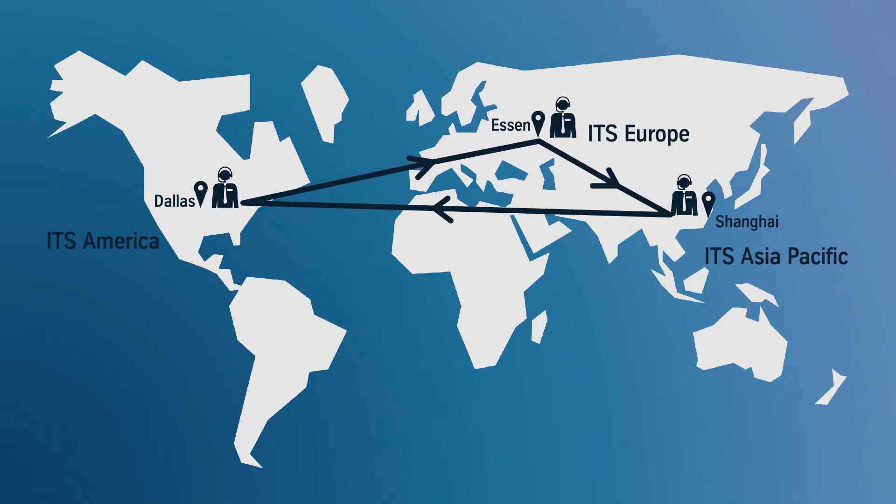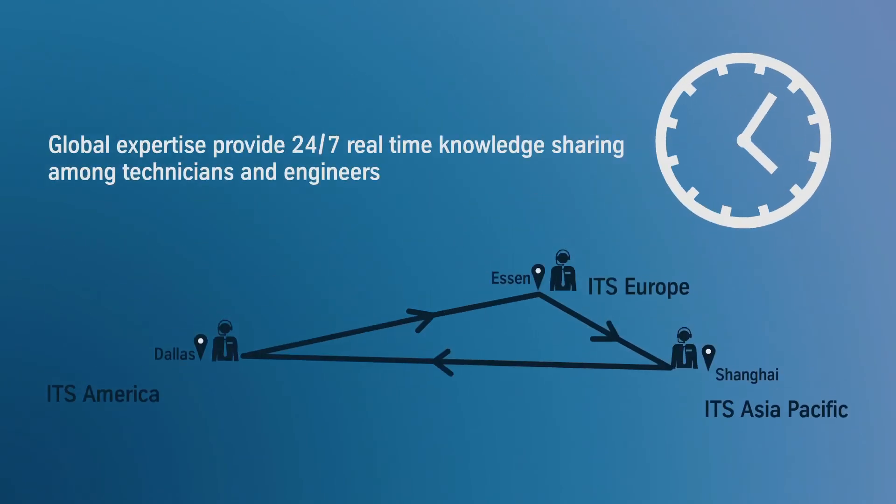ThyssenKrupp has set up a world-class, unique and dedicated ITS Asia-Pacific, providing global expertise and 24 by 7 real-time support to our engineers and technicians, ensuring knowledge can pass in all directions with the resulting increase in worldwide capability.